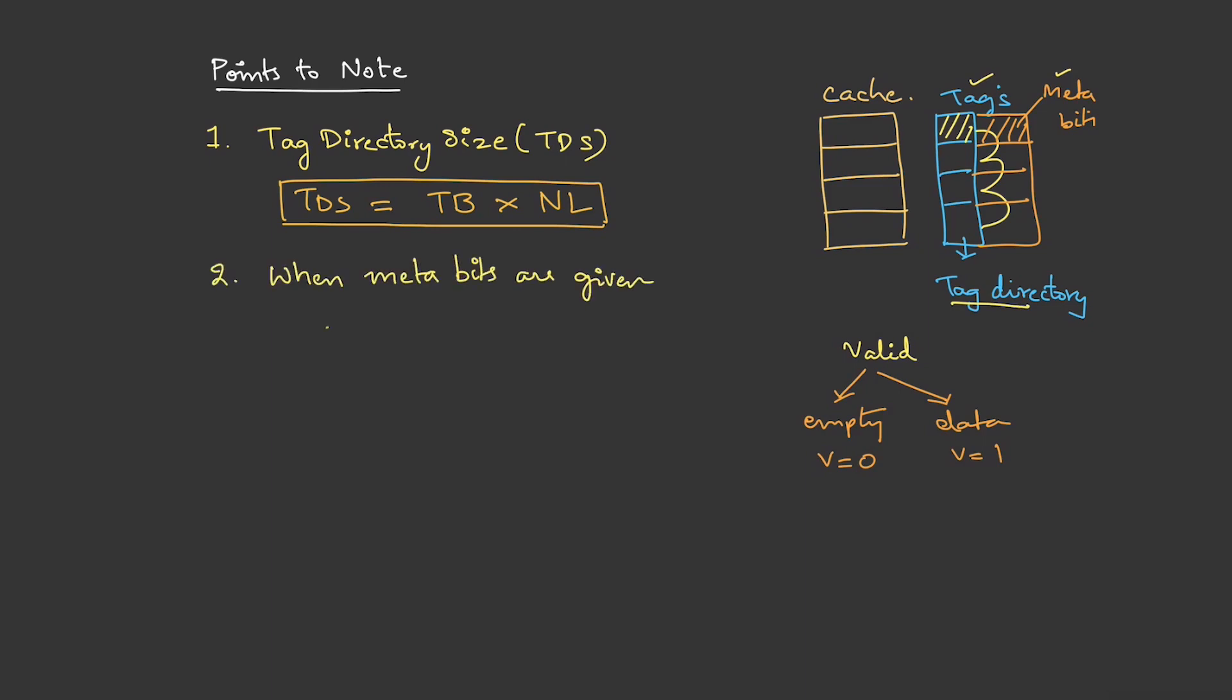When the meta bits are given, the tag directory size will be the total number of bits, that is tag bits plus the meta bits, into the number of lines. I hope you are clear with this.